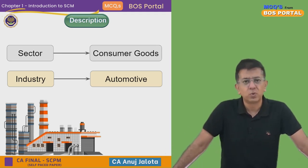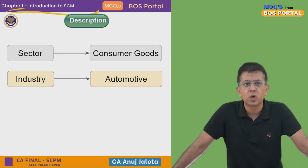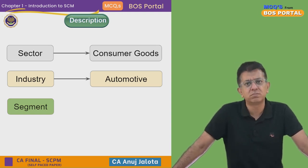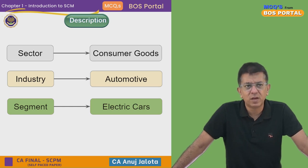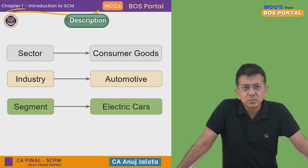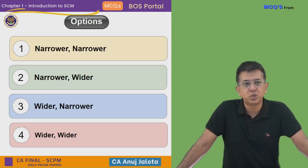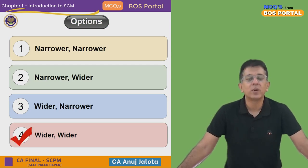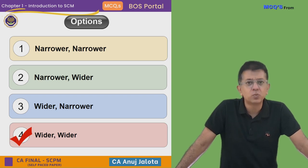The automotive industry is one example of an industry within a sector. Within automotive, there are further segments — electric cars, fuel-based cars, hydrogen-based cars, solar cars, and so on. So the hierarchy is: sector is the biggest, then industry, then segment. Therefore sector is wider than industry, and industry is wider than segment — the answer is the fourth option: wider and wider.